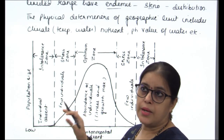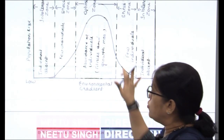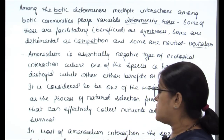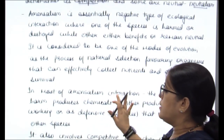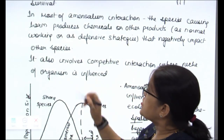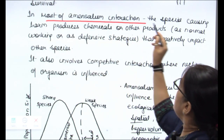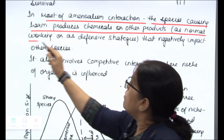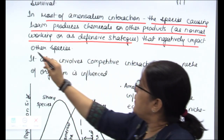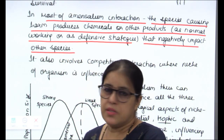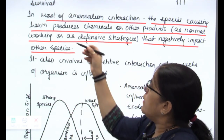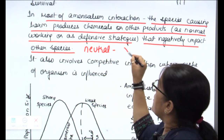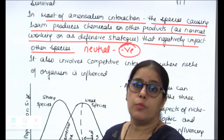As soon as you have created this diagram of the single niche axis, you have to move to biotic community — competition, symbiosis, and amensalism. Be very cautious of the sequence. First and foremost: amensalism interaction — a species causing harm produces a chemical or other product as a normal working or defensive strategy that negatively impacts another species. Amensalism is that type of interactive relation where one species is neutral and the other suffers the negative outcome. This is how you distinguish it.